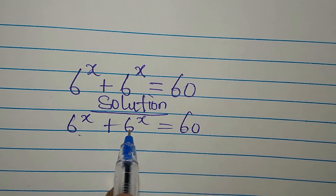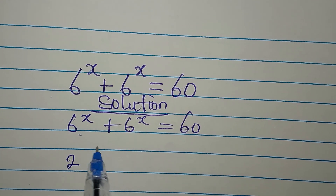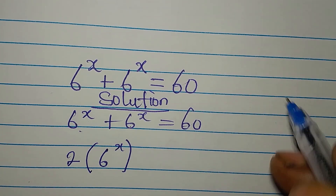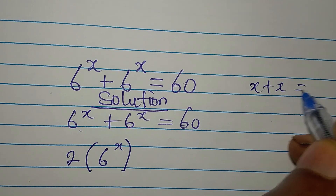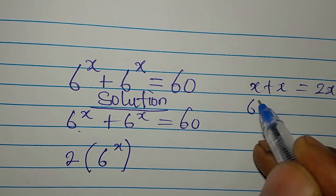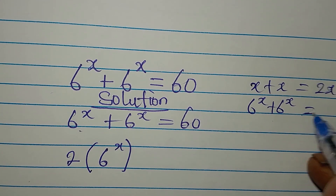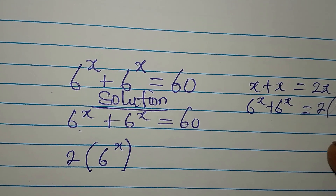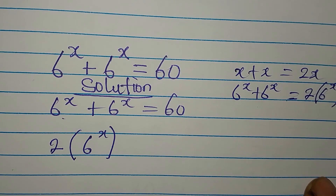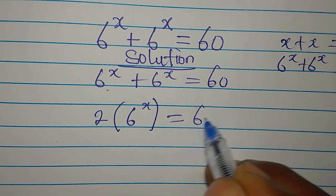Now this plus this — because we have the same thing — it means we have two of 6 to the power of x. Because if you have x plus x, you have 2x, right? So 6 to the power of x plus 6 to the power of x gives you 2 of 6 to the power of x. That is what I've just done over here. So this is equal to 60.